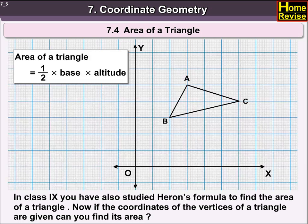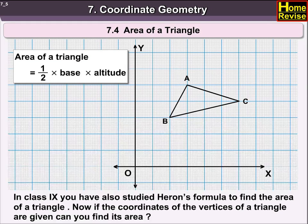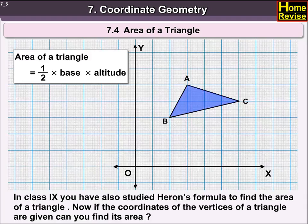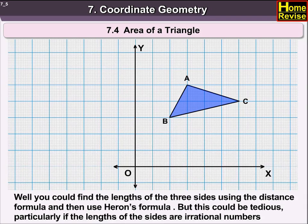In class 9, you have also studied Heron's formula to find the area of a triangle. Now, if the coordinates of the vertices of a triangle are given, can you find its area? Well, you could find the lengths of the three sides using the distance formula and then use Heron's formula.